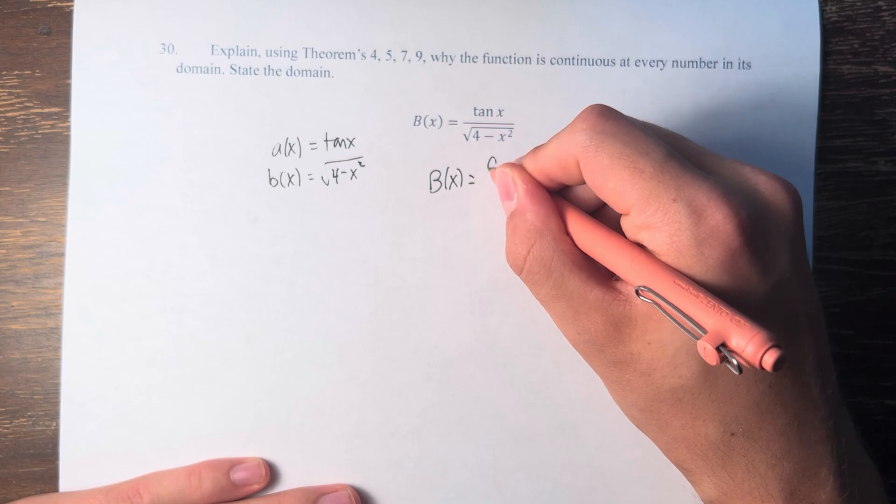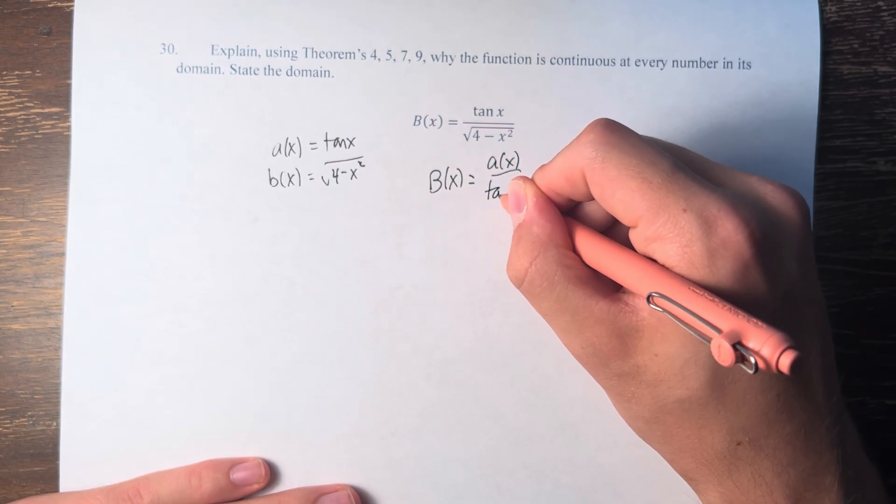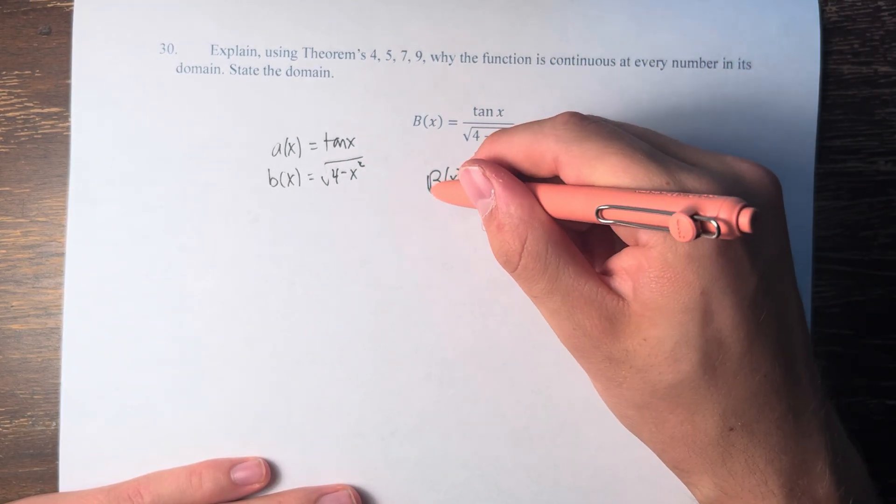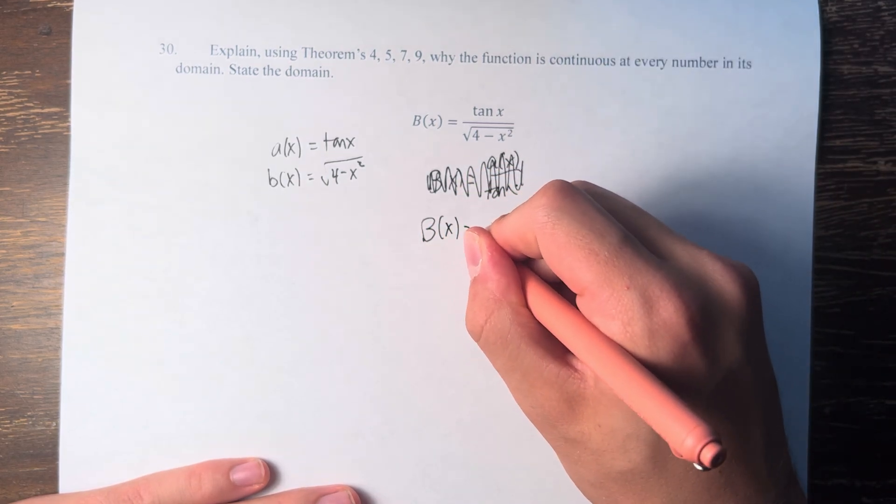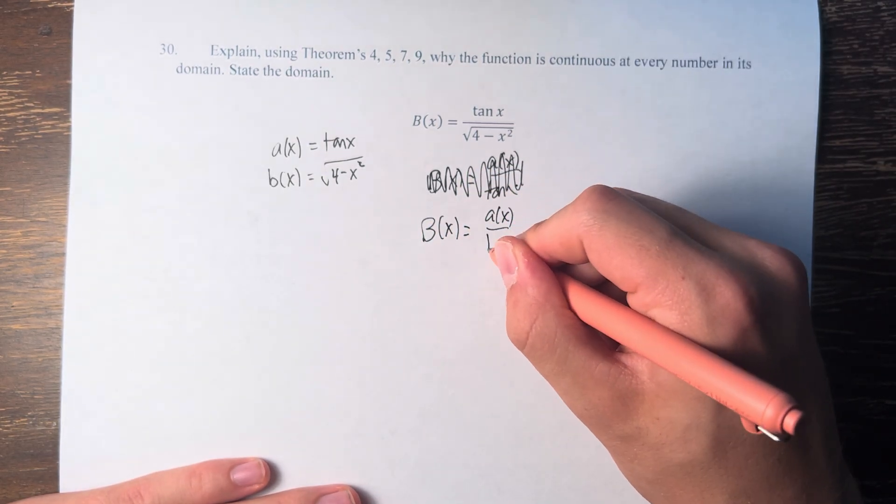B(x) is equal to a(x) over tangent of x. Or sorry, B(x) is equal to a(x) over little b(x).